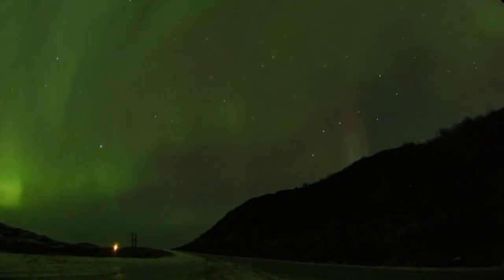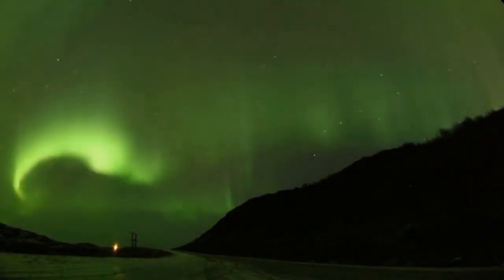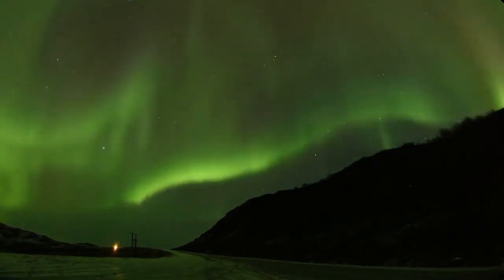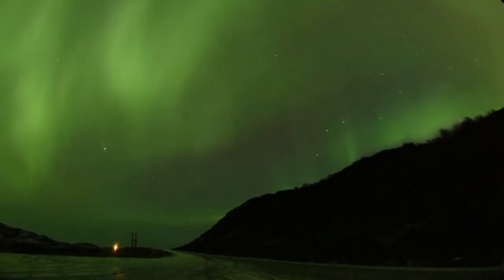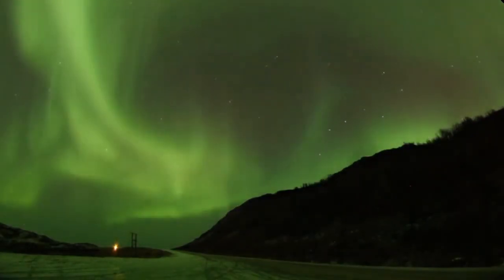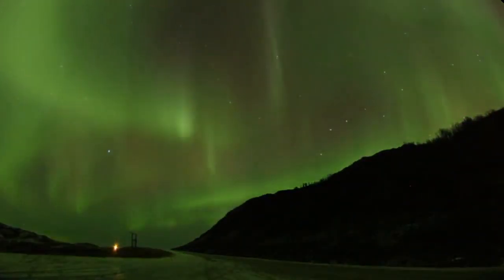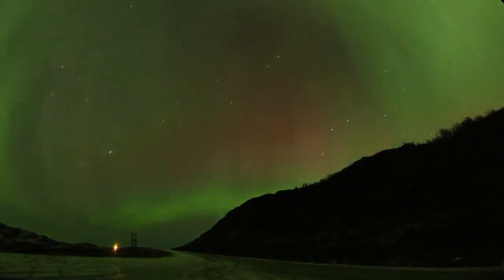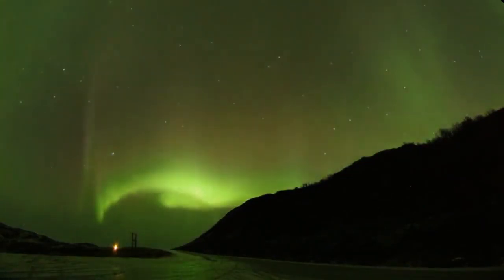Auroral rays follow the lines of force in Earth's magnetic field. Oxygen atoms emit a green light when hit by high-energy electrons. Low-energy electrons, higher in the atmosphere, cause oxygen atoms to glow red, giving the green aurora its red tip. These wispy auroras show us that our magnetic shield is still intact.